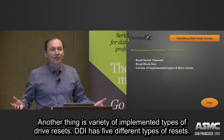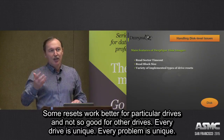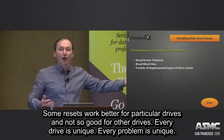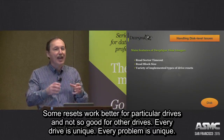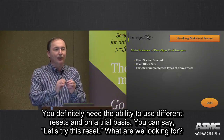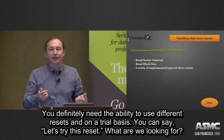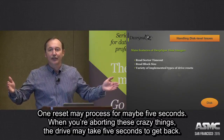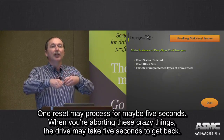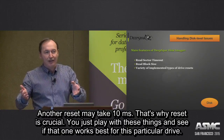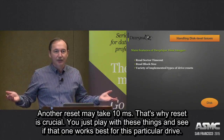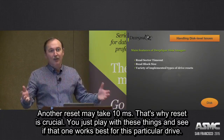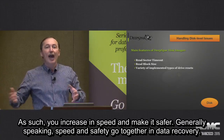Another thing is the variety of implemented types of drive resets. DDI has five different types of resets. Some resets work much better for a particular drive and not so good for another drive. Every drive is unique, every problem is unique, and you definitely need the ability to send different types of resets on a trial basis. You can just play — let's try this reset. One reset may process for five seconds, so when you're aborting these things, the drive will still take five seconds to get back on track. Whereas another reset may take 10 milliseconds. That's why it's crucial. You play with different resets and see which one works best for this particular drive, and that increases speed and makes it safer.